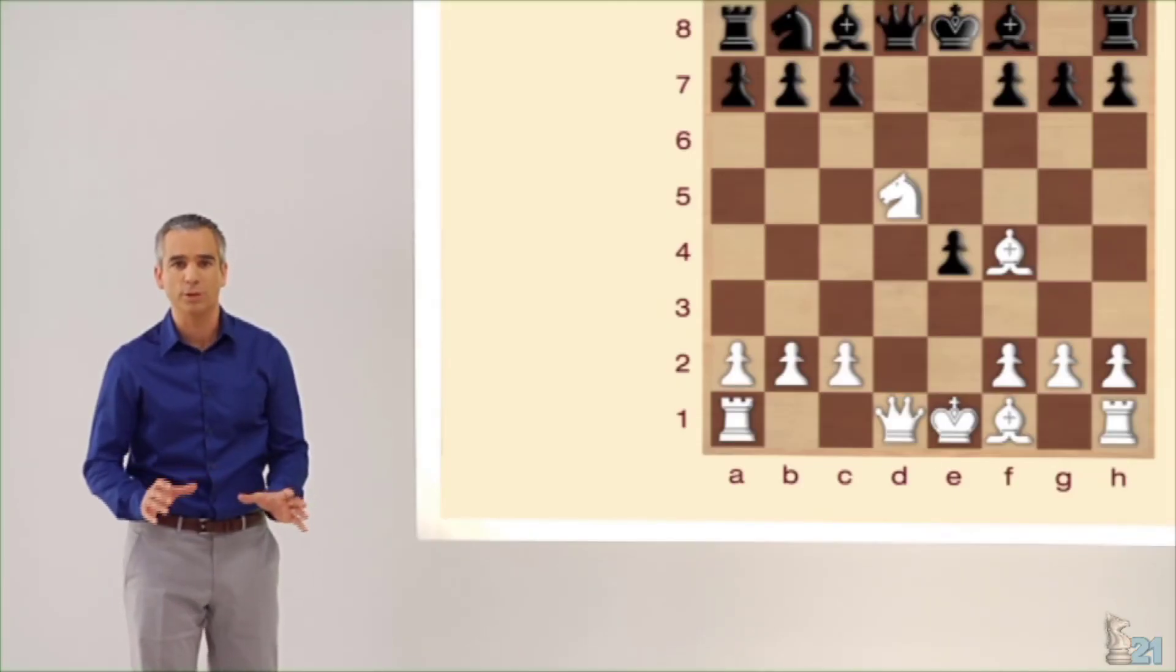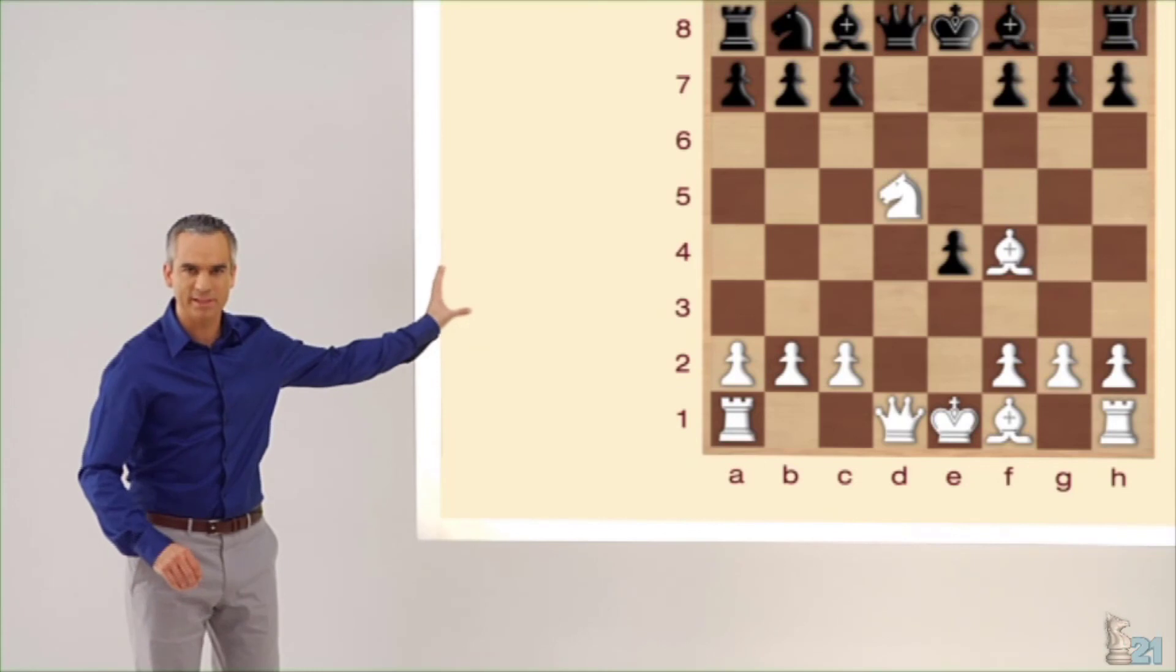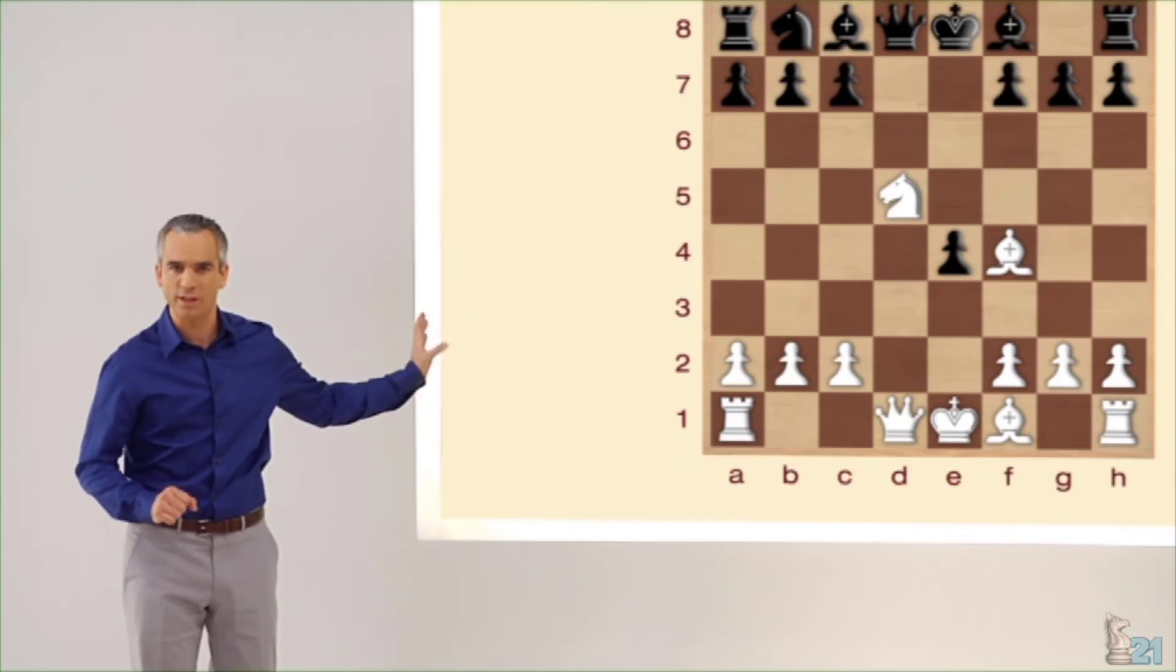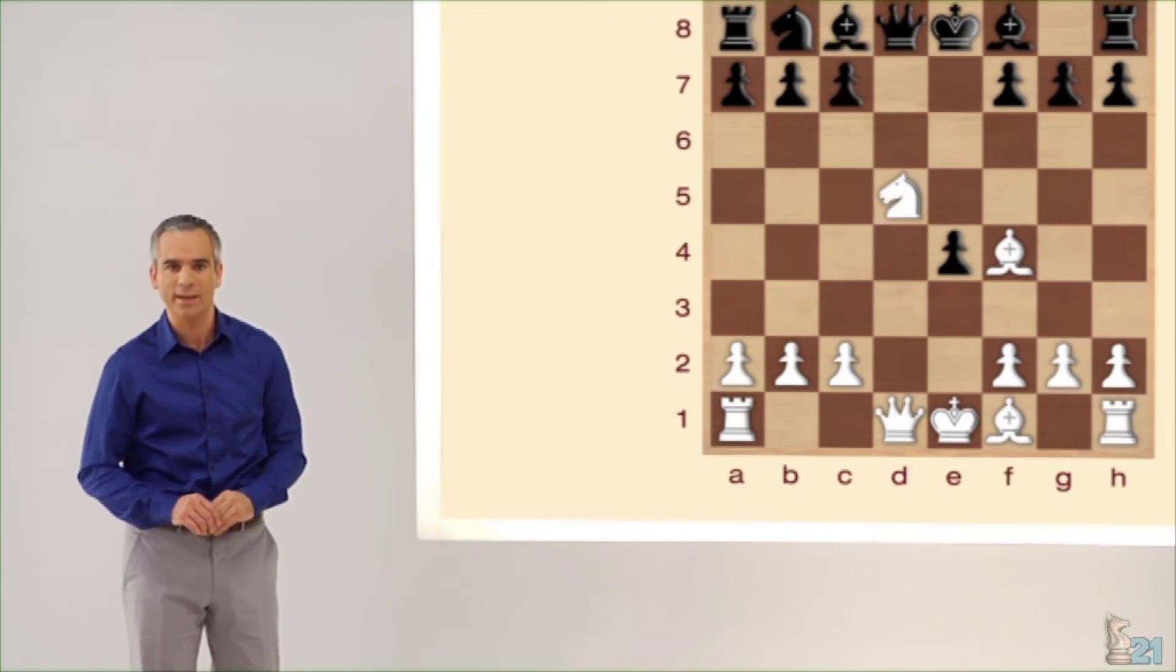¿Desvelamos la incógnita? Aunque hay dos jugadas posibles, la mejor es alfil de seis, ya que interrumpe la acción del alfil blanco sobre el punto C7, que de esta manera queda a salvo.